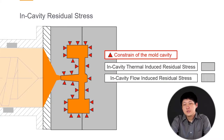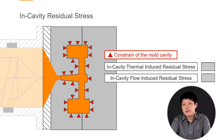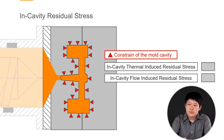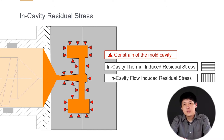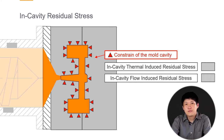Before we talk about the procedures, we would like to help you understand the process-induced properties better. So let's go back to an earlier moment when the injected part is still in the cavity. When the cavity is filled with the melted material and the material touches the cavity surface, the material will be stuck there and it becomes a constraint around the part. This constraint comes from the mold cavity surface.